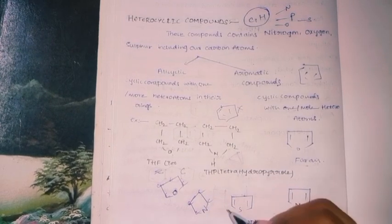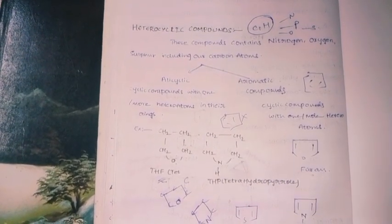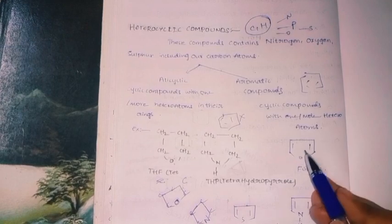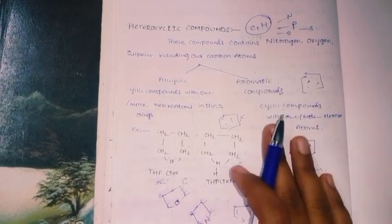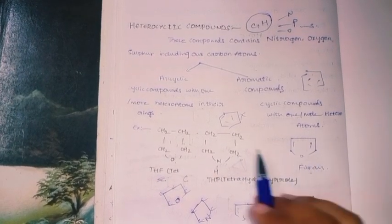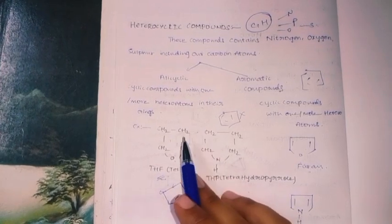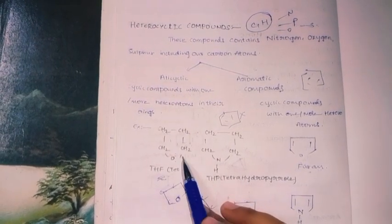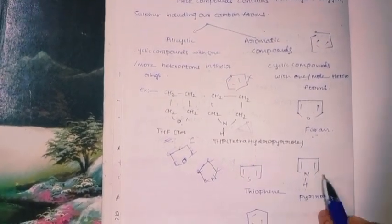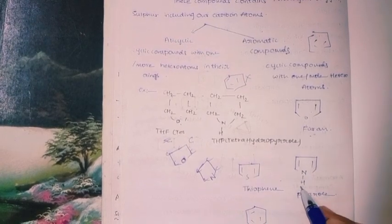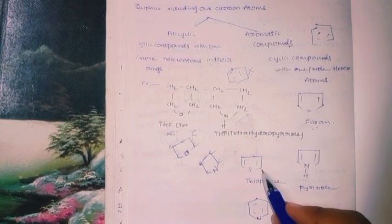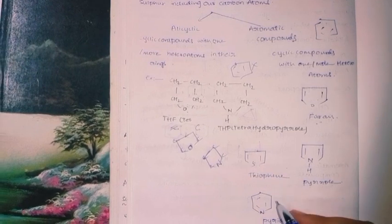Tetrahydrofuran: positions one, two, three, four carbon and fifth position is oxygen. We can also see alicyclic type — tetrahydropyrrole. Pyrrole is a five-membered ring with one nitrogen and four carbons. Pyrrole contains alternating bonds making it aromatic heterocyclic. Thiophene is also a five-membered ring with sulfur at the fifth position.